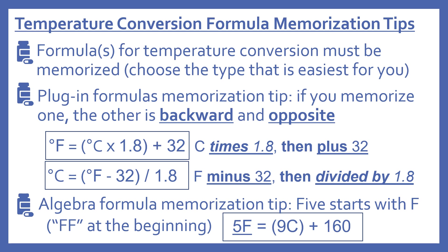For the plug-in formulas, if you memorize one, the other is backward and opposite. Degrees Fahrenheit equals Celsius times 1.8 plus 32. For degrees Celsius, it equals Fahrenheit minus 32 divided by 1.8 — backward and opposite. And if you choose the algebra formula, you can remember it by noting that 5 starts with F, so it's 'FF' at the beginning: 5F equals 9C plus 160.